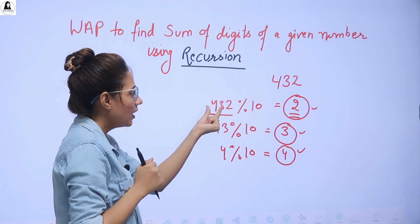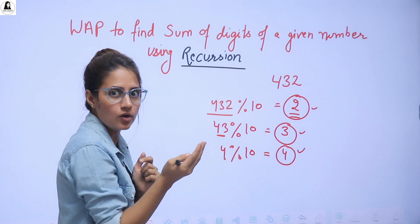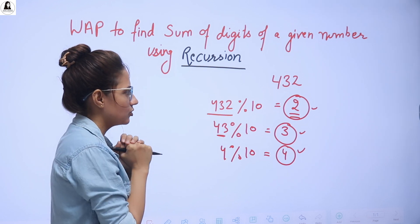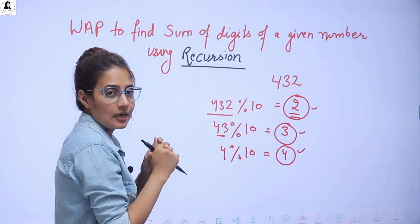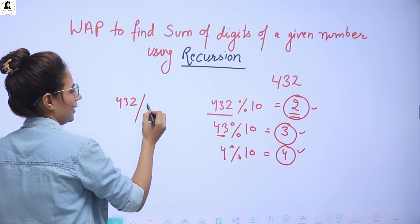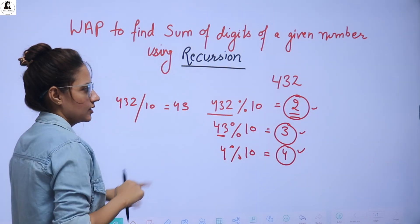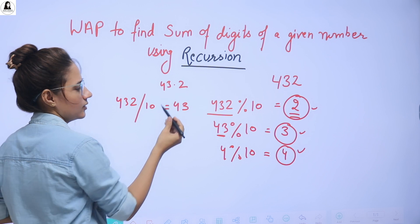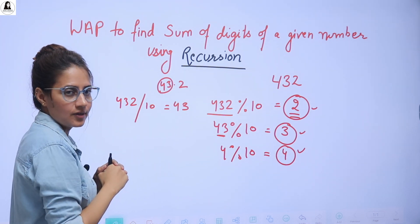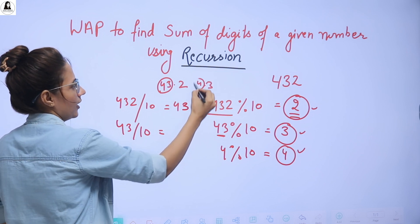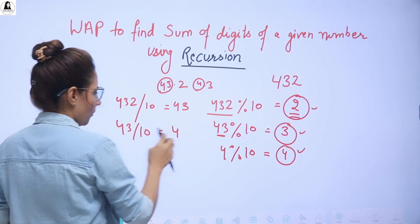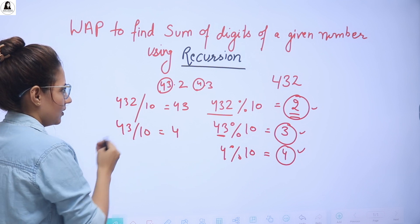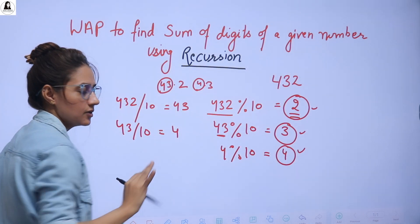So we will use the modulo operator. But after 432, how will you get 43? The number is 432, and after getting 2, I want the number to be 43 only, and after that, 4 only. We can apply one more operator — the divide operator. So 432 divided by 10 gives 43. This is the modulo operator and this is the divide operator. If I take int only, then 43 only I will get. And after that 43 divided by 10 gives 4.3, as int that's 4. So these two operators you need to use — divide then apply modulo, divide then apply modulo, and just add these numbers. That's it.